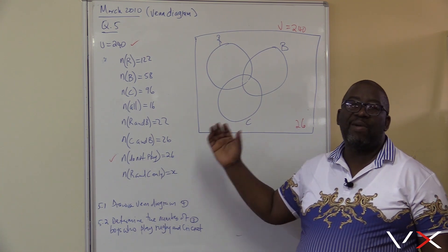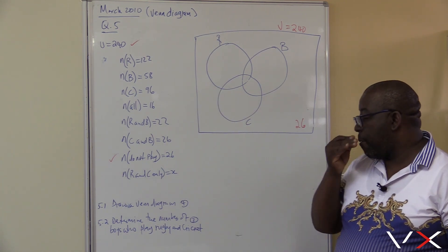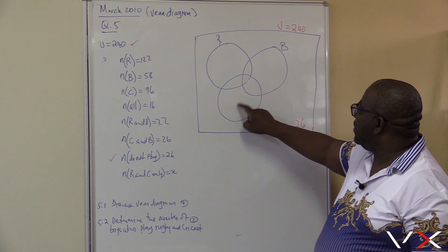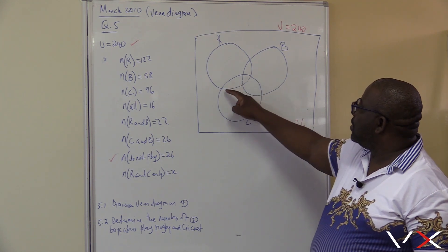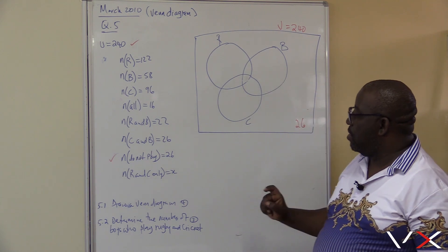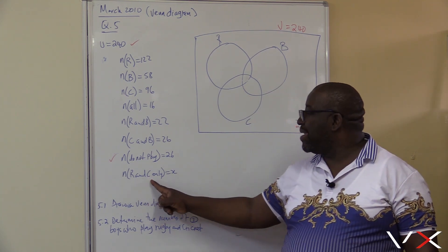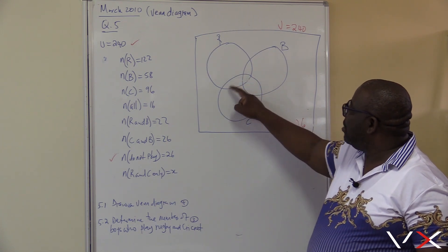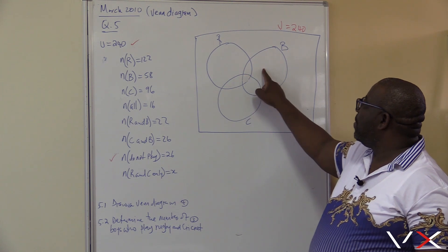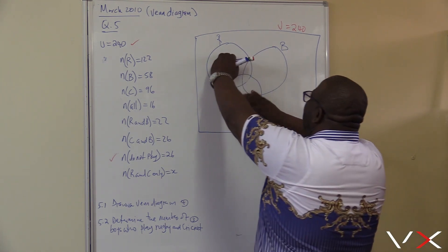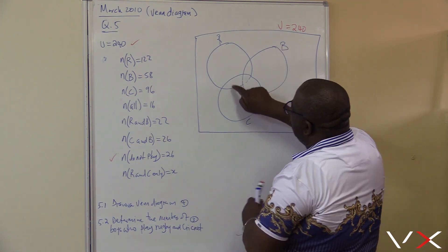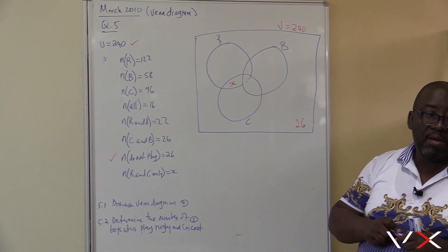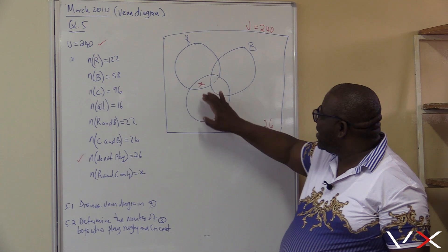It is important that whatever I put on my event diagram, I indicate that I've already dealt with it. Rugby and cricket — this is where the intersection is, and this intersection also includes rugby, cricket, and basketball. But this region represents rugby and cricket only, which we call X. Because once you move over to include basketball, you're no longer in rugby and cricket only. So this intersection is called X.